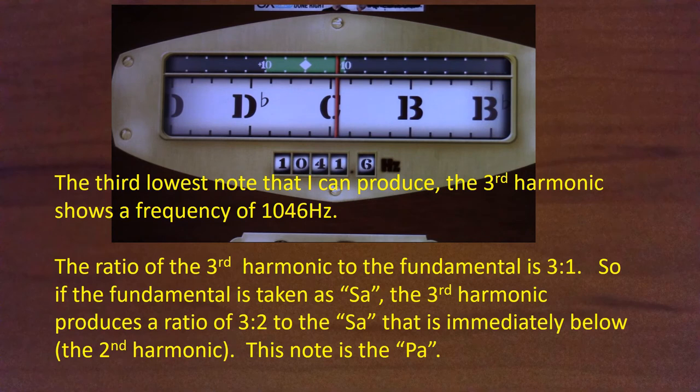The third lowest note, the third harmonic, shows a frequency of around 1046 hertz. The ratio of the third harmonic to the fundamental is three to one. So if the fundamental is taken as Sa, the third harmonic produces a ratio of three to two to the Sa that is immediately below, which is the second harmonic. This note is the Pa — Panchamam.